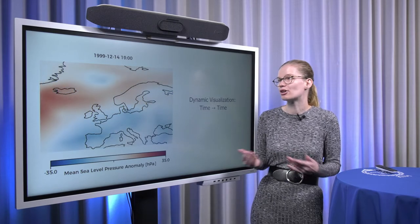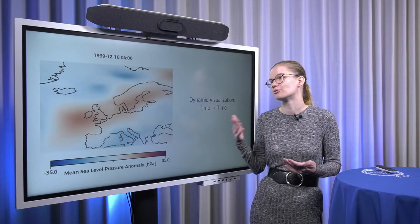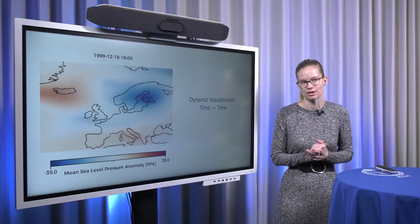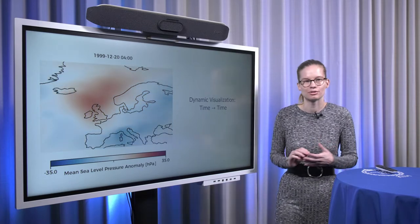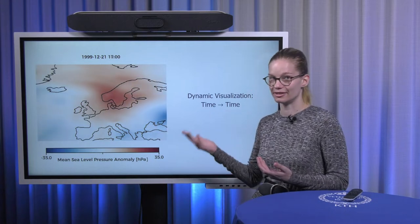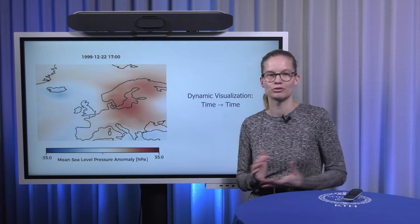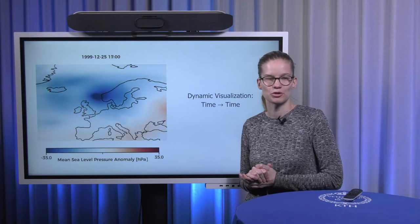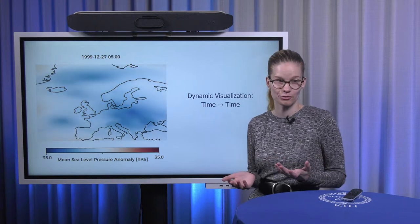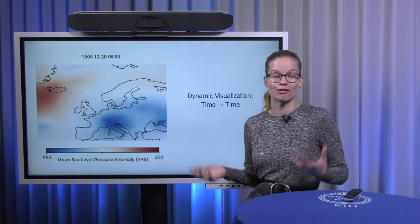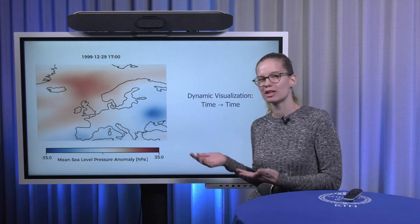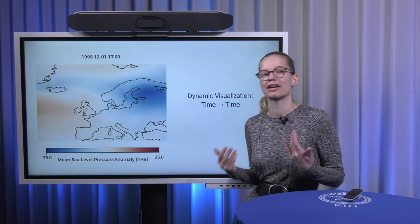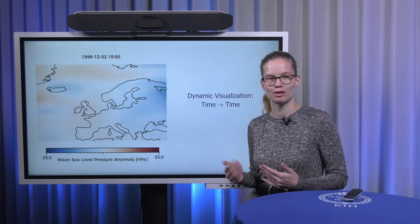But there is a drawback of using an animation like that. If we look at this video then there's a couple of questions that are really difficult to answer. For example, if I were to ask you, is there any time period in here where all of Europe is covered by a low pressure anomaly? Or how long do these features persist over time? Where is the longest of them? Where is the largest of them? We would be able to ask these questions with maybe going back and forth in the video, but a different kind of visualization could help to see that directly.